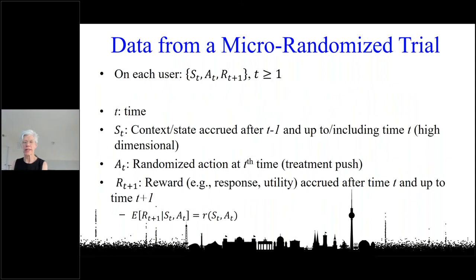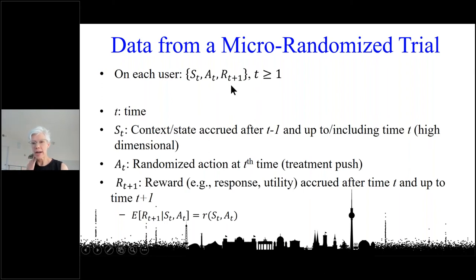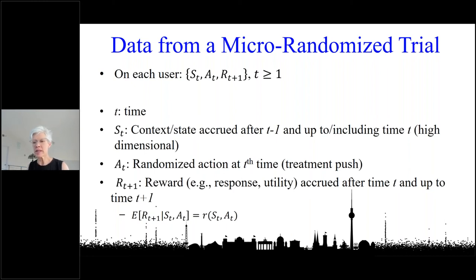What does the data look like? For each user, you can imagine a sequence — almost like a time series — of what we'll call context or state (S), action (A), and reward (R). The context or state includes any observations accruing over time: the person's current location, their most recent self-reported mood, and so on. The action represents our messages — the treatment pushes. The reward is some near-time response we're interested in.